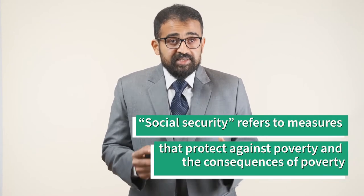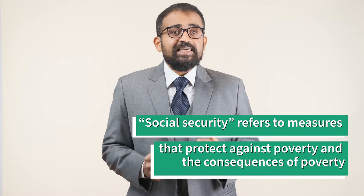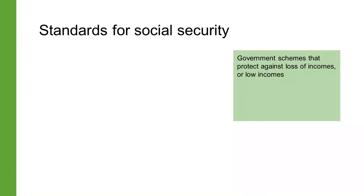Another aspect of work that labor law has set standards for is that of social security. This is a term that refers to any scheme that protects people against poverty and deprivation or the consequences of poverty, such as inadequate health care. In the context of labor law, it usually refers to a government scheme that protects against loss of income or low incomes, either through insurance schemes or other welfare benefits.